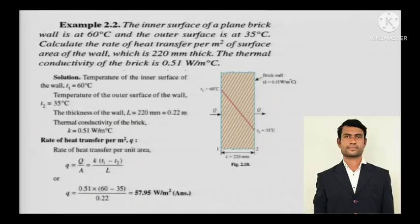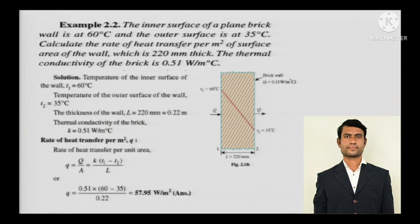The inner surface of a plane brick wall is at 60 degree Celsius and the outer surface is at 35 degree Celsius. Calculate the rate of heat transfer per meter square of surface area of the wall, which is 220 mm thick. The thermal conductivity of the brick is 0.51 watts per meter degree Celsius.